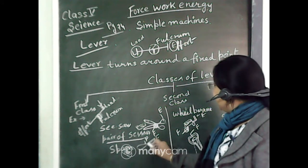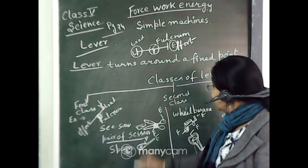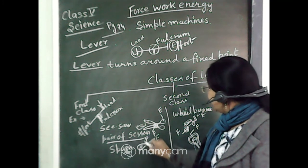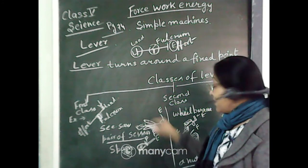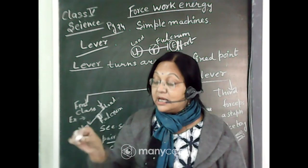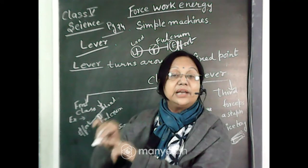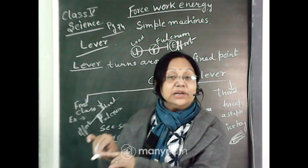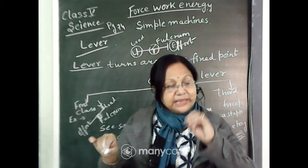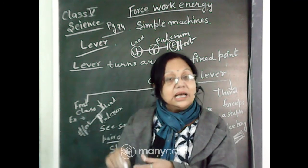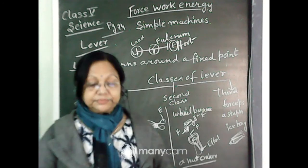The last example is the spoon. Here the load is whatever we are eating — soup, noodles, rice. The middle part where the broader portion begins is the fulcrum. When we are feeding somebody, we apply effort on the handle end of the spoon. The food at the broader part is the load, and the middle part of the spoon is always the fulcrum. This is the first class lever.